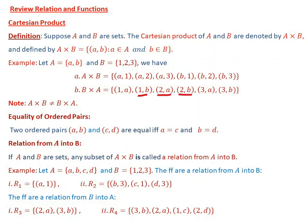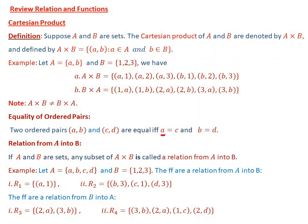B cross A is similarly given as the set containing the ordered pairs: {(1,a), (1,b), (2,a), (2,b), (3,a), (3,b)}. Note that A cross B is not always equal to B cross A — the Cartesian product of two sets is not commutative. Equality of ordered pairs: two ordered pairs (a,b) and (c,d) are equal if and only if a = c and b = d.